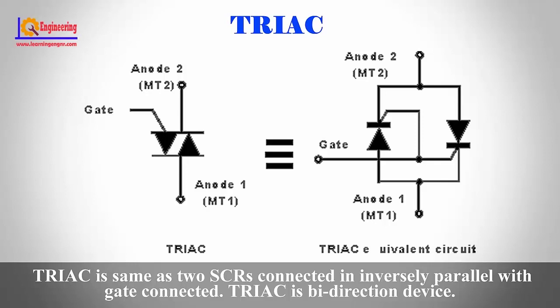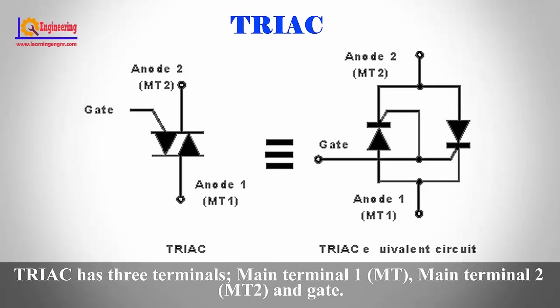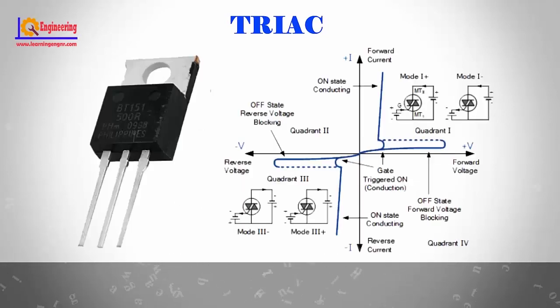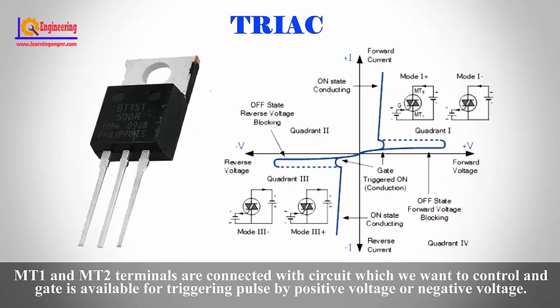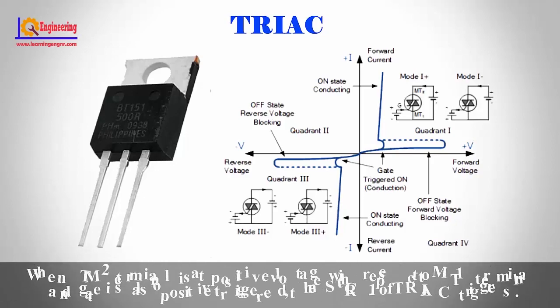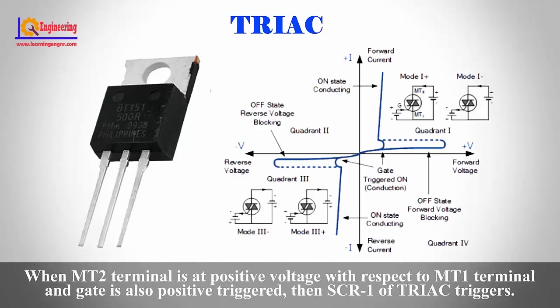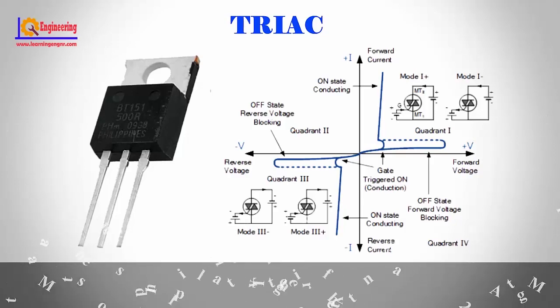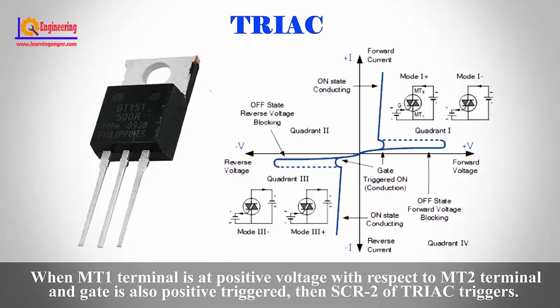TRIAC is equivalent to two SCRs connected in inverse parallel with a common gate. TRIAC is a bidirectional device with three terminals: main terminal 1 (MT1), main terminal 2 (MT2), and gate. MT1 and MT2 are connected to the circuit being controlled, and the gate is triggered by positive or negative voltage. When MT2 is positive with respect to MT1 and the gate is positively triggered, SCR1 of the TRIAC triggers. When MT1 is positive with respect to MT2 and the gate is positively triggered, SCR2 triggers.